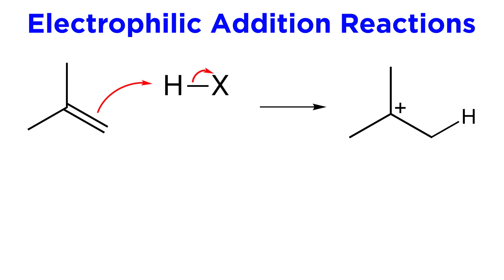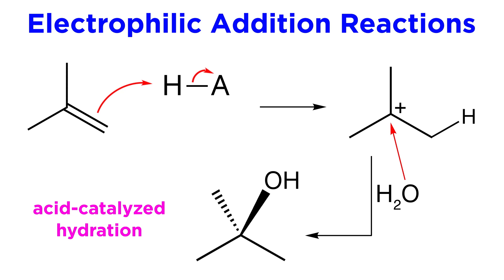In any of these cases, the pi bond is coordinating to a proton, and then something else attacks the carbocation intermediate, so we can call these reactions hydrohalogenation, where H and X are added, or acid-catalyzed hydration, where H and OH are added. But no matter what is added, they all follow the same general mechanism.